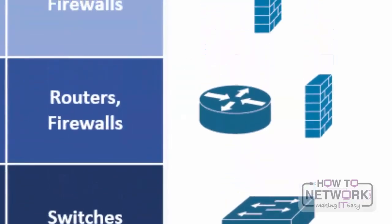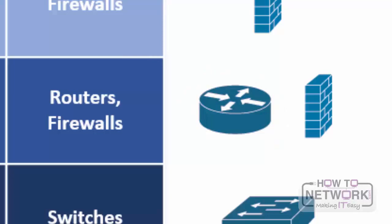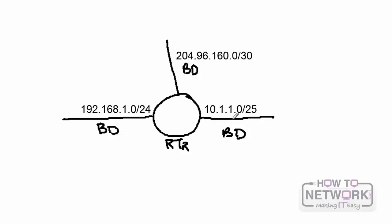Routers operate at layer 3 of the OSI model and thus use layer 3 addresses. The primary purpose of a router is to forward traffic to the correct subnet — it consistently looks up destination paths in its routing table. Routers break up broadcast domains; switches do not. Each port on a router is its own separate broadcast domain, ensuring that broadcasts are not forwarded throughout the entire network. Generally, a specific subnet is assigned to each interface, so broadcasts for that subnet are limited to that interface only.